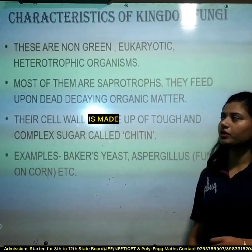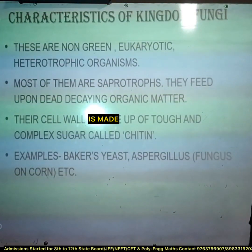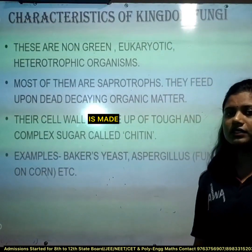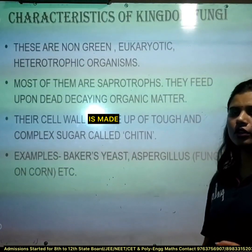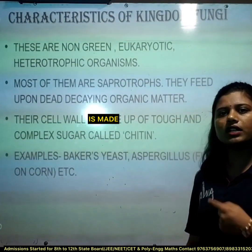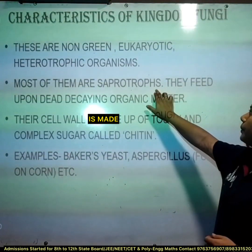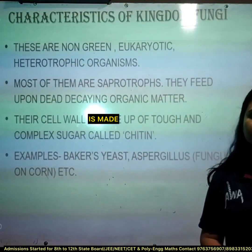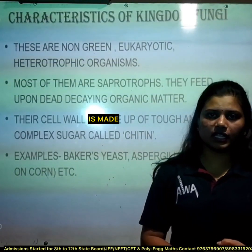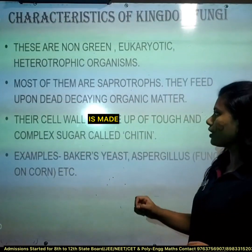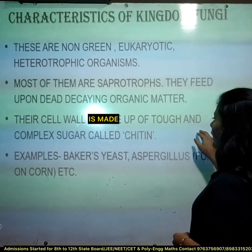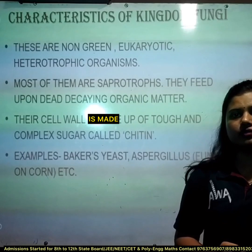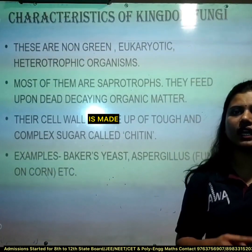Now the characteristics of Kingdom Fungi. First, these are non-green eukaryotic heterotrophic organisms — eukaryotic means they have a well-defined nucleus, and heterotrophic means they depend on others for their food. Second, most of them are saprotrophs, meaning they depend upon dead or decaying organic matter. Third, their cell wall is made up of a tough and complex sugar called chitin.